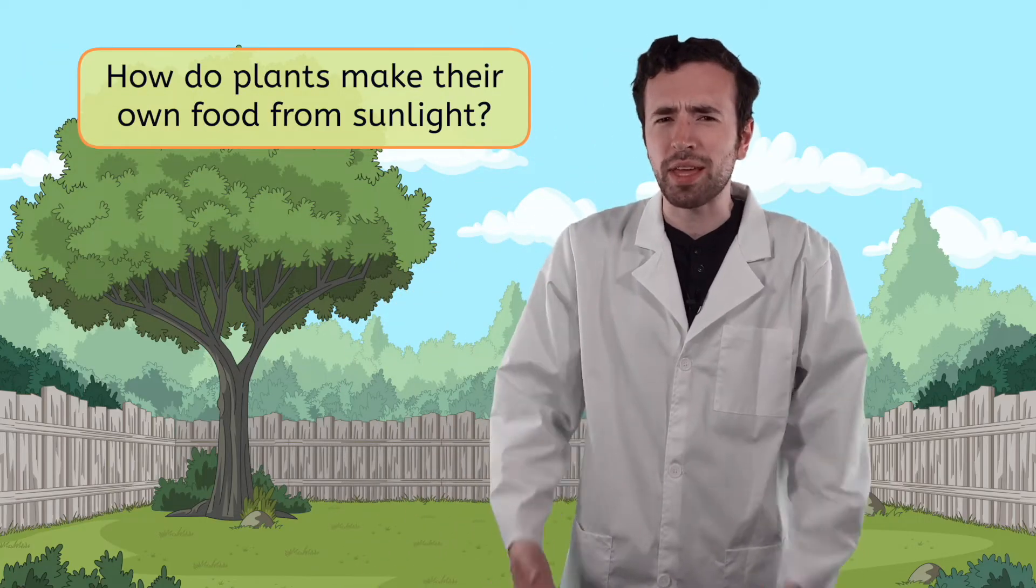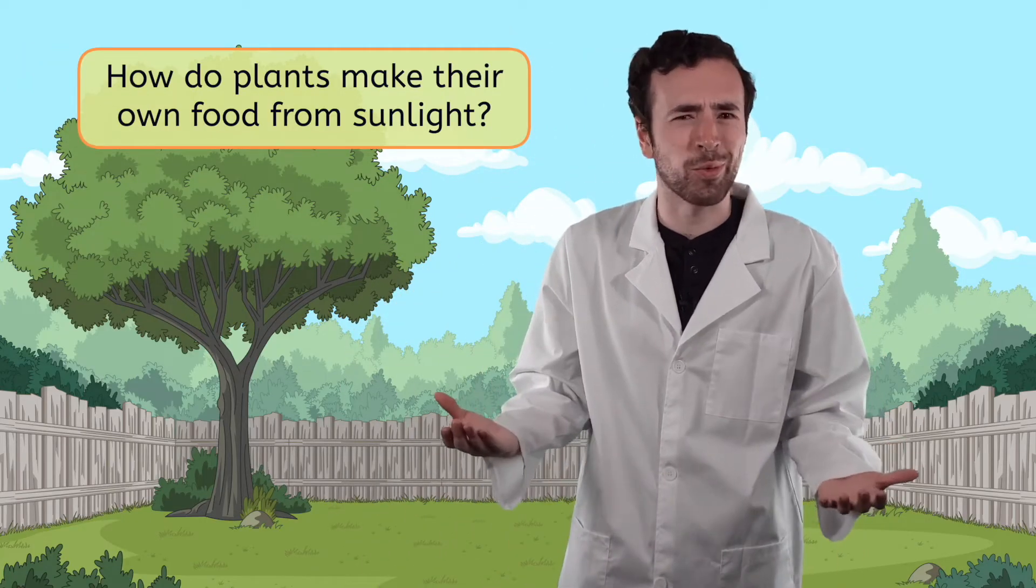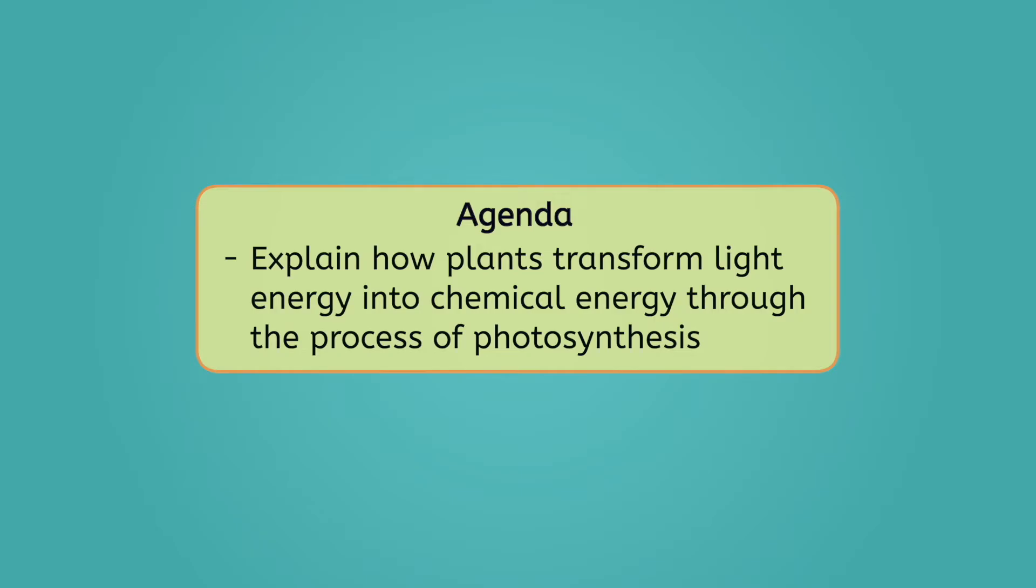Well, I guess I'll have to come up with a new lunch plan, but how do plants make their own food from sunlight anyway? By the end of today's lesson, you will be able to explain how plants transform light energy into chemical energy through the process of photosynthesis. Let's get into it!